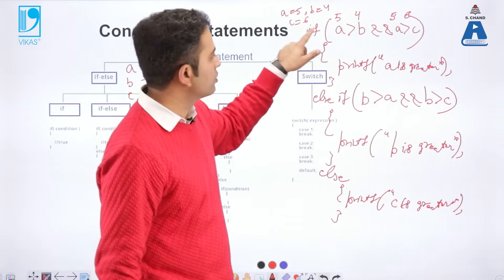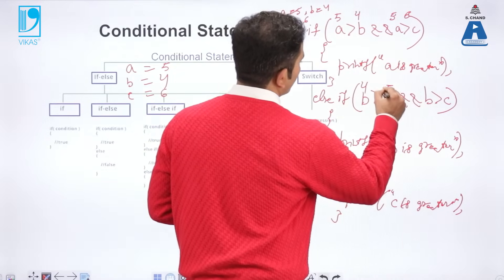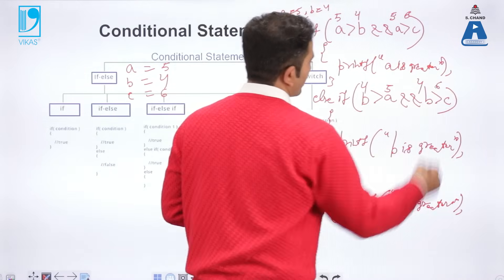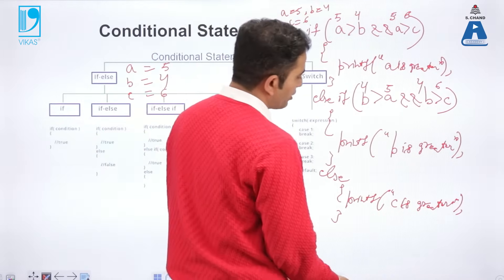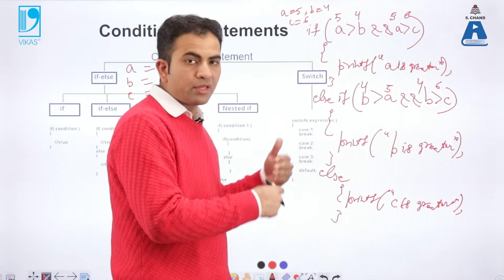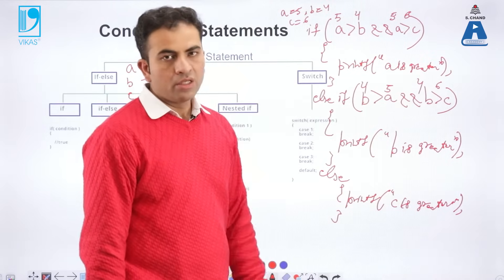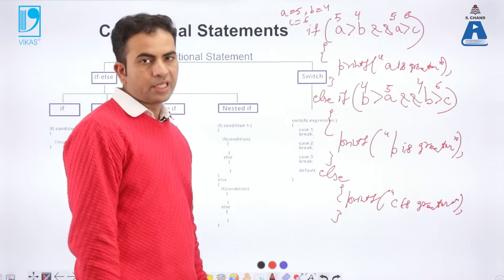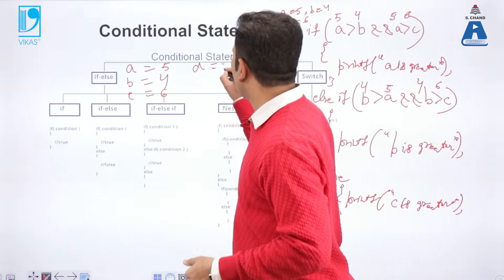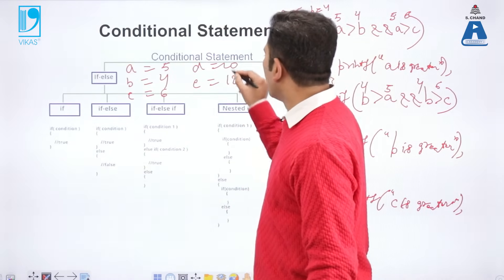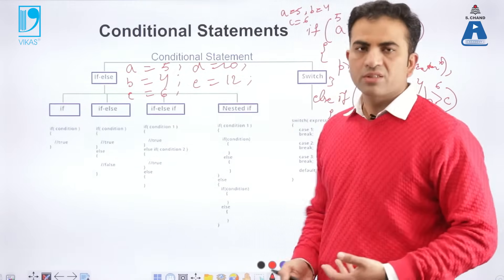Since the first condition is false, control goes to the else-if part. In else-if: 4 > 5 AND 4 > 6 — both conditions are false, so control goes directly to the else part. In the else part, by default, since we've already checked a against b and c, and b against a and c, both conditions being false means the third condition is by default true — so c is the greatest. We can increase or decrease our if-else-if statements as needed, for example for five variables a, b, c, d, e.